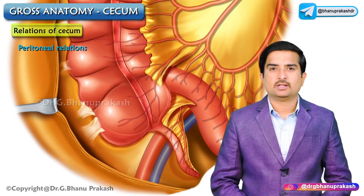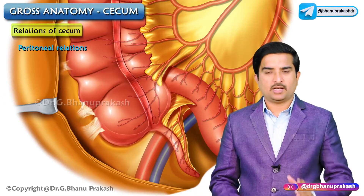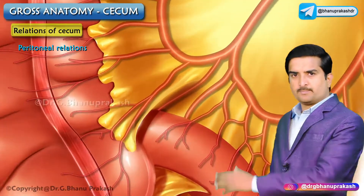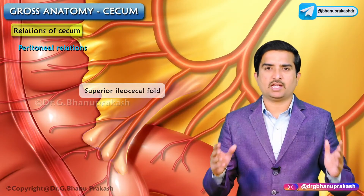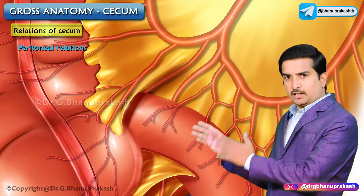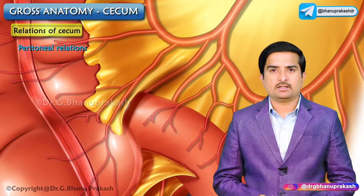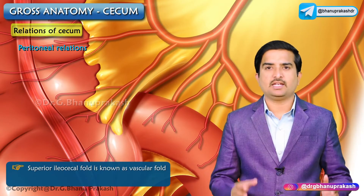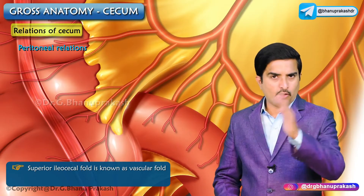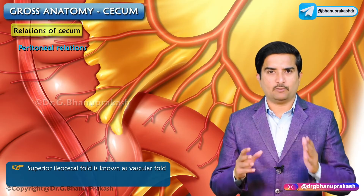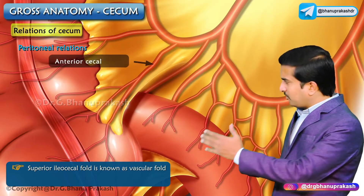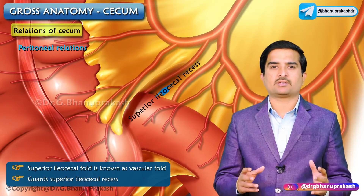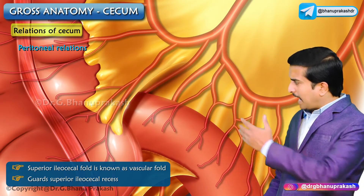The peritoneal folds in relation to the cecum and terminal part of the ileum are as follows. The superior ileocecal fold lies between the ileum and ascending colon. It is known as the vascular fold of the cecum, as it is a fold of peritoneum raised by the anterior cecal artery. It guards the superior ileocecal recess and opens downwards and to the left.